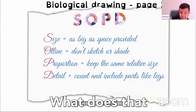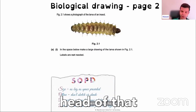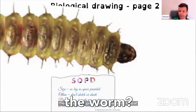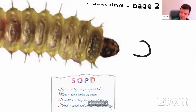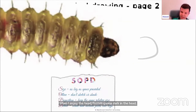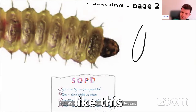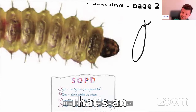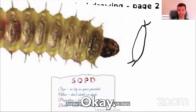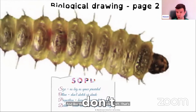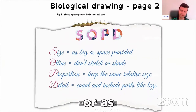Drawing is an outline. What does that mean? This means I'm not going to shade. Look at the head of that worm — when I am drawing the head, I'm not going to darken it. It's just going to be an outline. So if I am to draw this segment here, I'll draw like this — that's an outline of that segment. I don't shade, just keep it as a line or an outline.